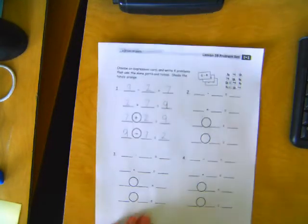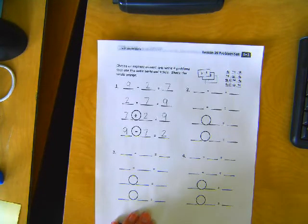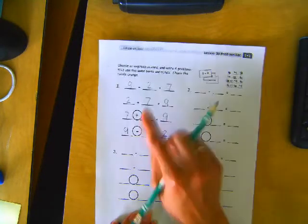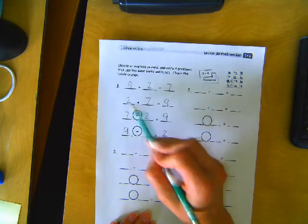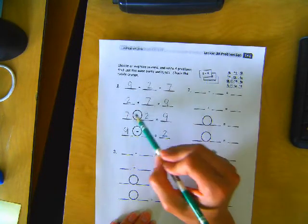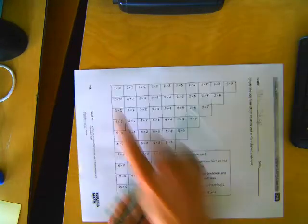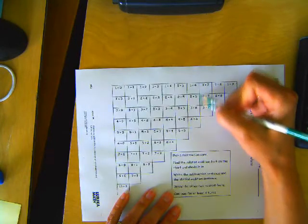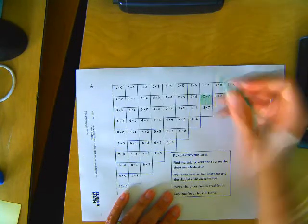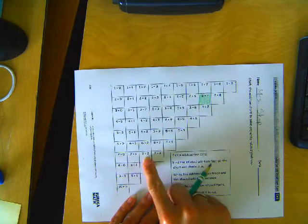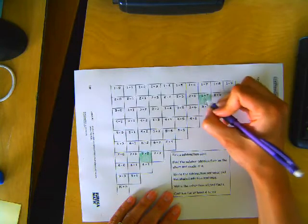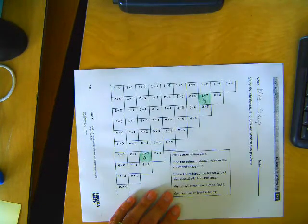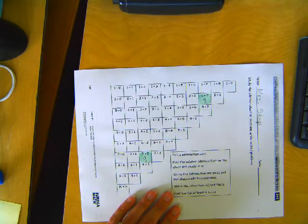Now, on the back we have that addition chart. So let's look to see if we can find, we're going to have to use our addition ones. Let's see if we can find 2 plus 7 and 7 plus 2. And we can even write what they equal. 9 and 9.